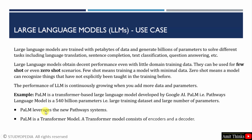We can see the example of PaLM — P-A-L-M. It is a transformer-based large language model. Google also announced PaLM 2. It is a Pathways Language Model of 540 billion parameters, trained on a larger training dataset with a large number of parameters. It is also a transformer model, which includes encoders and decoders, as discussed before.